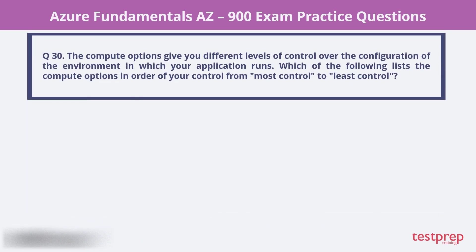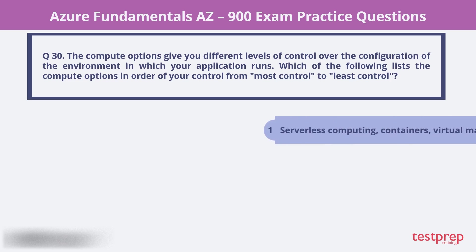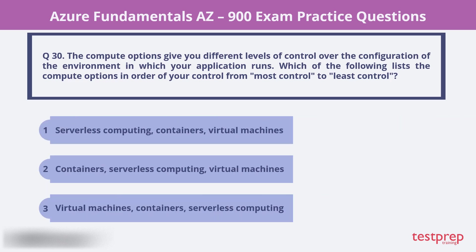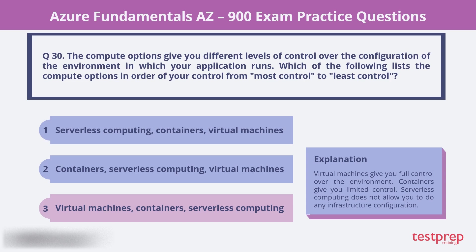Question 30. The compute options give you different levels of control over the configuration of the environment in which your application runs. Which of the following lists the compute options in order of your control from most control to least control? The correct option is 3. Virtual machines give you full control over the environment. Containers give you limited control. Serverless computing does not allow you to do any infrastructure configuration.